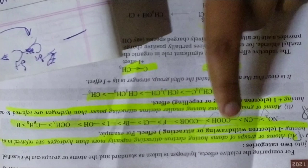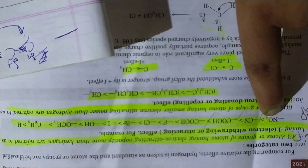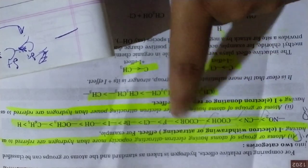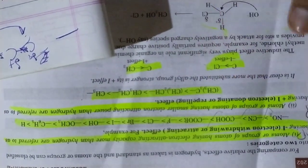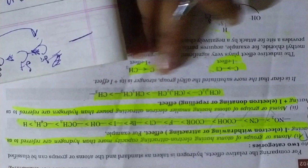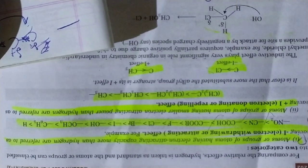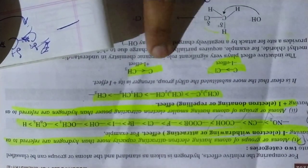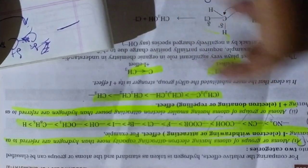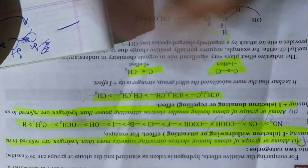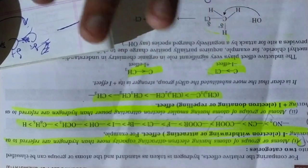When we have an electron withdrawing group — like fluorine, chlorine, bromine, NO2, CN, COH — these cause the I negative (I-) effect. But if we have an electron donating group — for example CH3 — which donates electrons, that is the I positive (I+) effect. If something makes the carbon negative, the group giving that is considered positive, so we get I+ from electron donors.